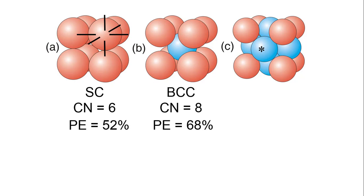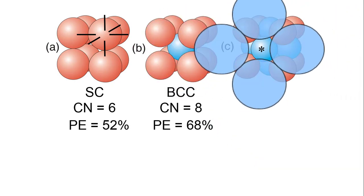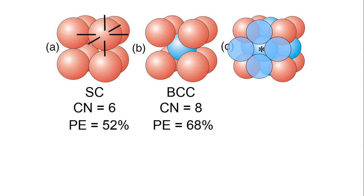If we were to extend the structure, there would be four more blue atoms in front that it would touch. The face-centered cell has a coordination number of 12. Geometry shows it has a packing efficiency of 74%.